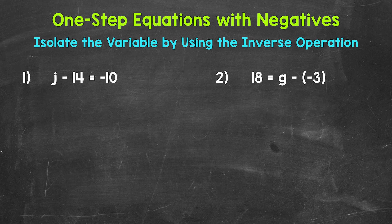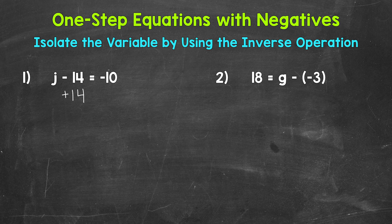Let's jump into number one, where we have J minus 14 equals negative 10. We need to isolate that variable of J and figure out what J equals. Since 14 is being subtracted from J, we need to undo that subtraction by using the inverse operation — the opposite of subtraction is addition. So let's add 14 to the left side of the equation.